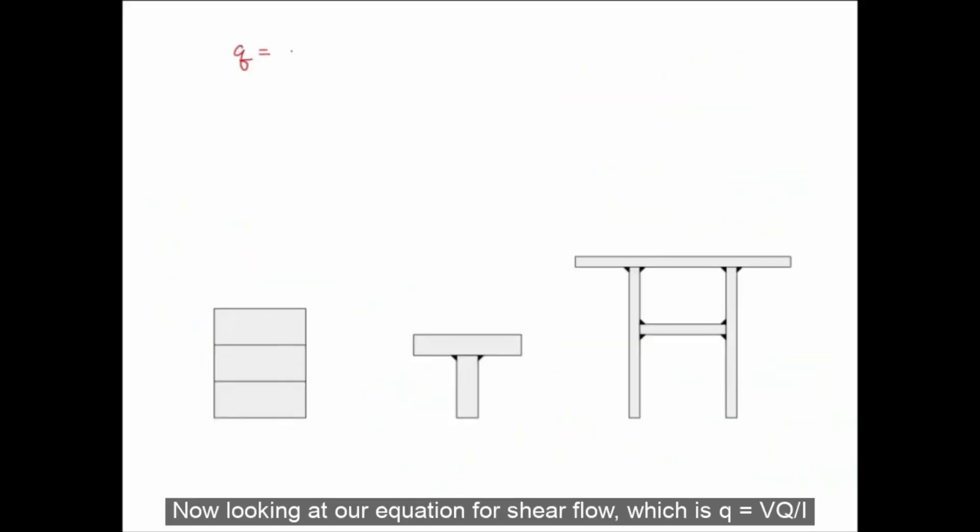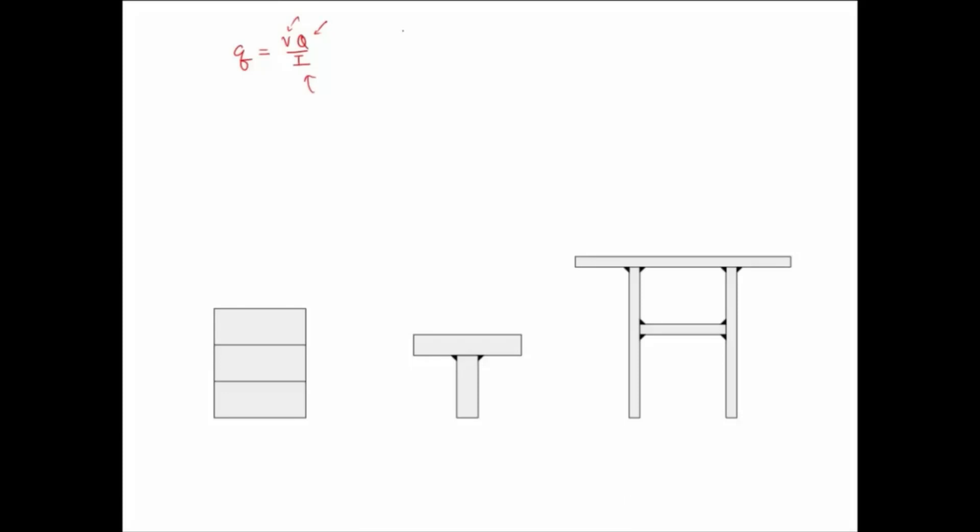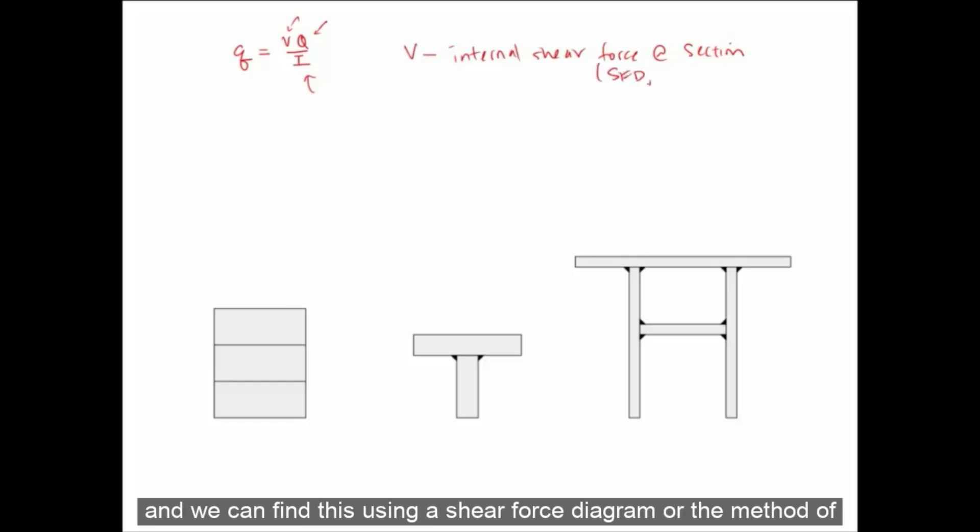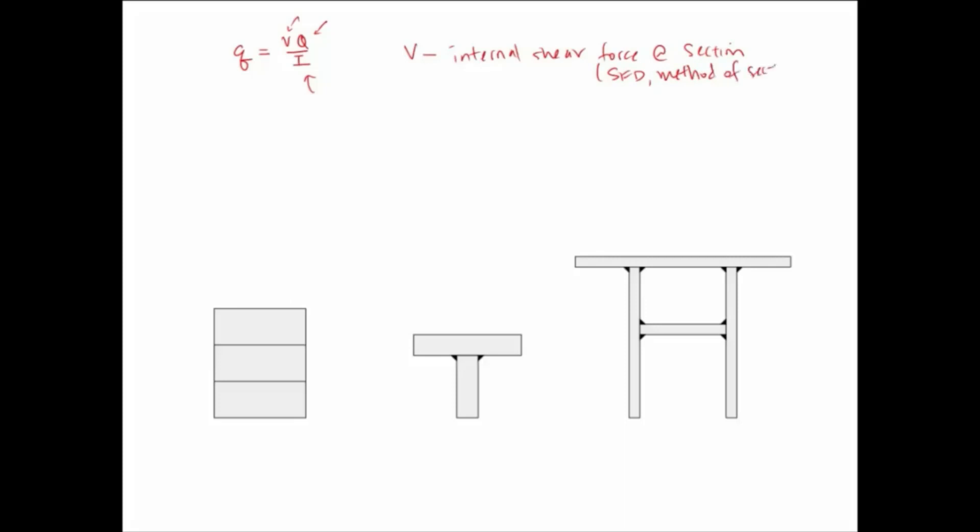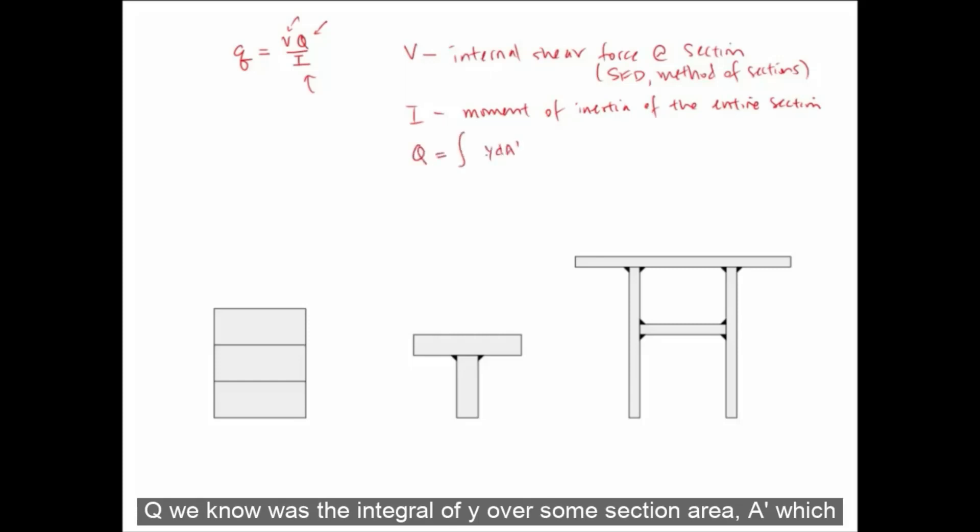Now looking at our equation for shear flow, which is Q equals VQ over I, we can see that we need VQ and I. And these are actually the same values that we calculated previously for the shear formula trying to find the transverse shear. So V is again the internal shear force at the section, and we can find this using a shear force diagram or the method of sections. I is the moment of inertia of the entire section.